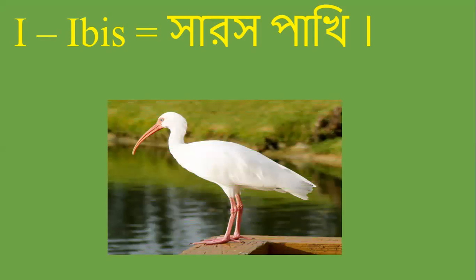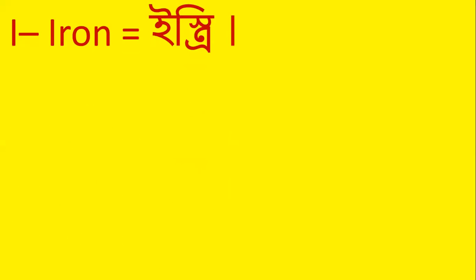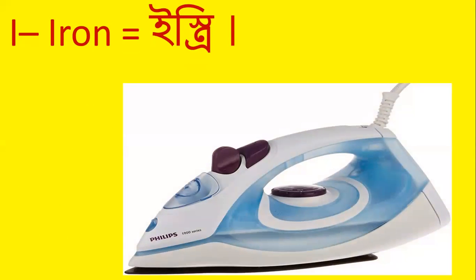I for Ibish. Utter Ibish. Spell with me: I-B-I-S. Ibish. Ibish means sharoosh pakhi. I for Iron. Utter Iron. Spell: I-R-O-N. Iron. Iron means tree (iron).